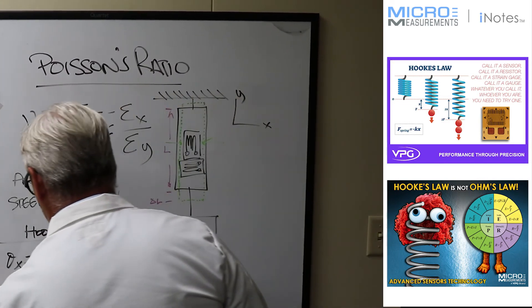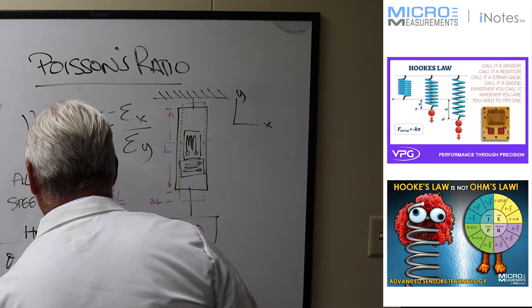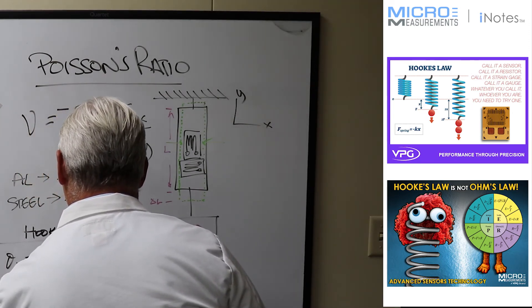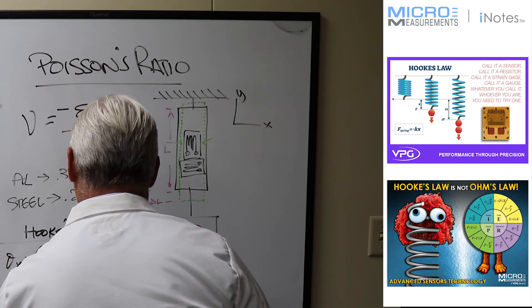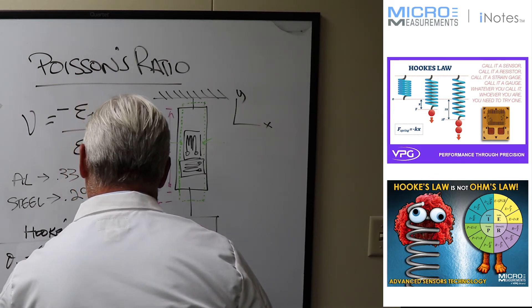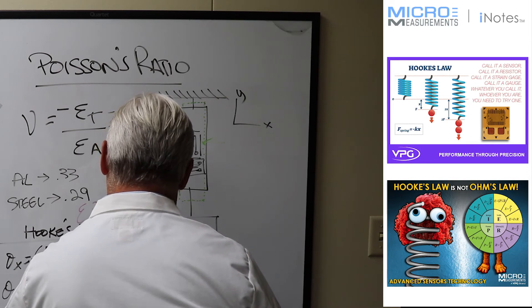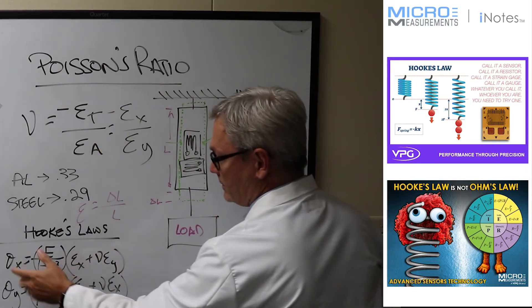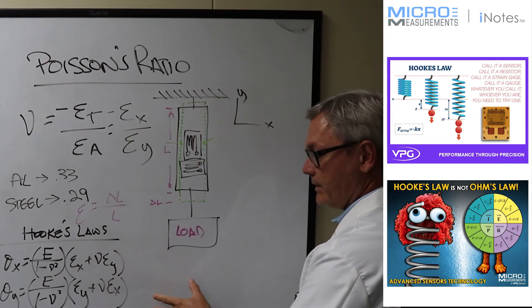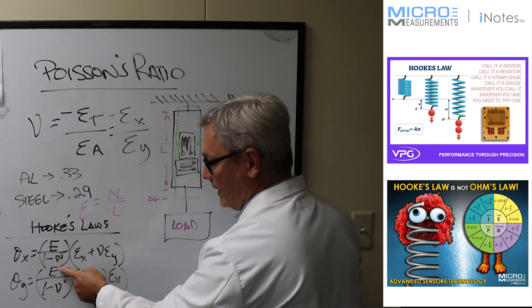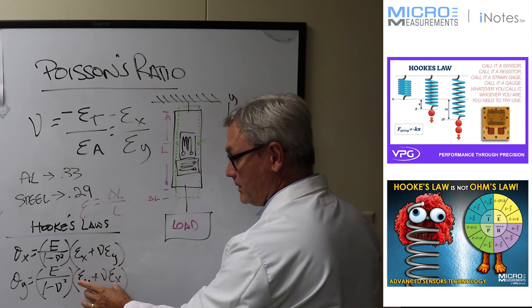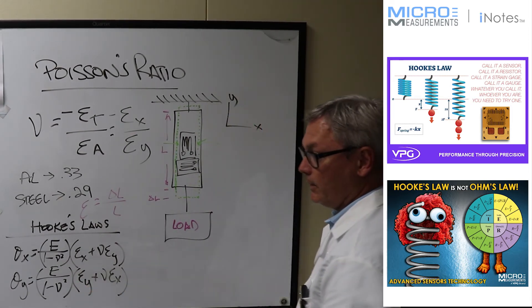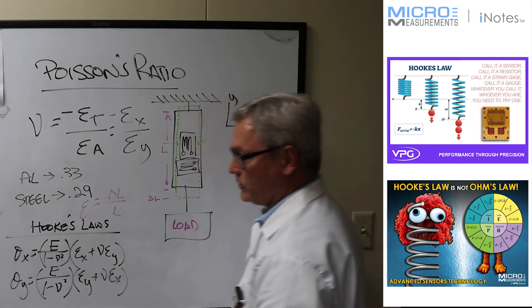And if we wanted to calculate the strain in the y direction, it's going to be equal to the Young's modulus over one minus Poisson ratio squared times the strain in the y direction plus the Poisson ratio times the strain in the x direction. So in order to calculate stresses for Hooke's Law in a biaxial stress state, you got to have the Poisson ratio, you got to have the Young's modulus, and basically you got to have the strain from two different gauges that are perpendicular to each other in order to be able to calculate those stresses.